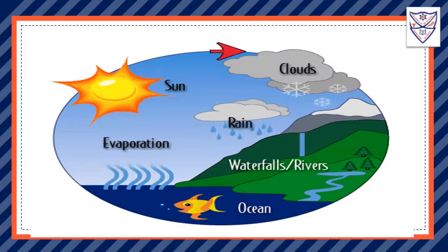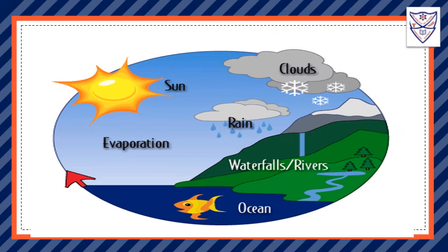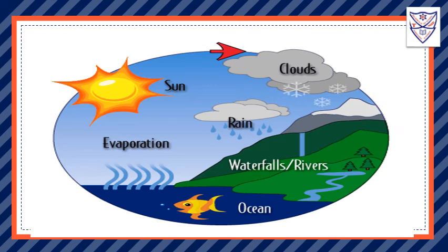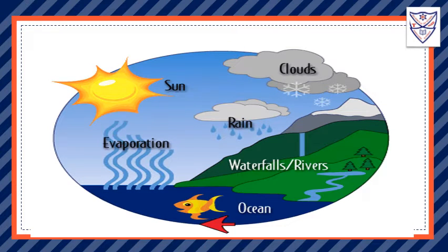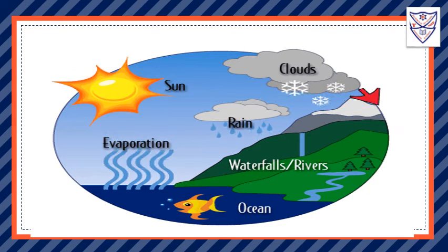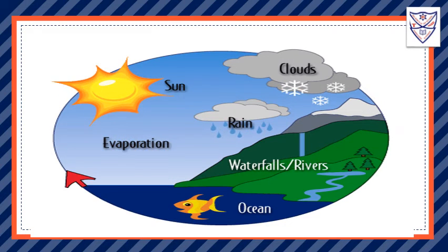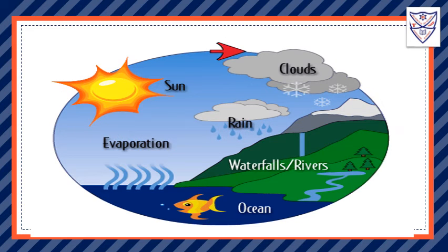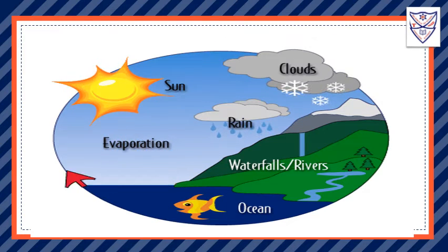During the daytime, when it is very hot, water evaporates from rivers, lakes, oceans, etc., and rises as water vapor into the atmosphere. On cooling, this water vapor changes back into water droplets and falls on earth in the form of rain. This entire process of change from one form to another is known as the water cycle.